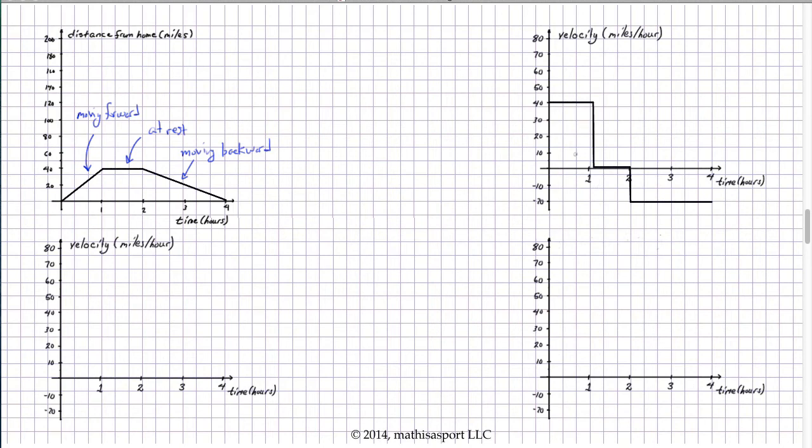And so, we then created these velocity graphs, velocity versus time graphs, from the distance versus time graphs. And velocity, let's think about what it means more formally. Velocity is the rate of change of position with respect to, that's just an abbreviation I use, with respect to time. Velocity is the rate of change of position with respect to time.